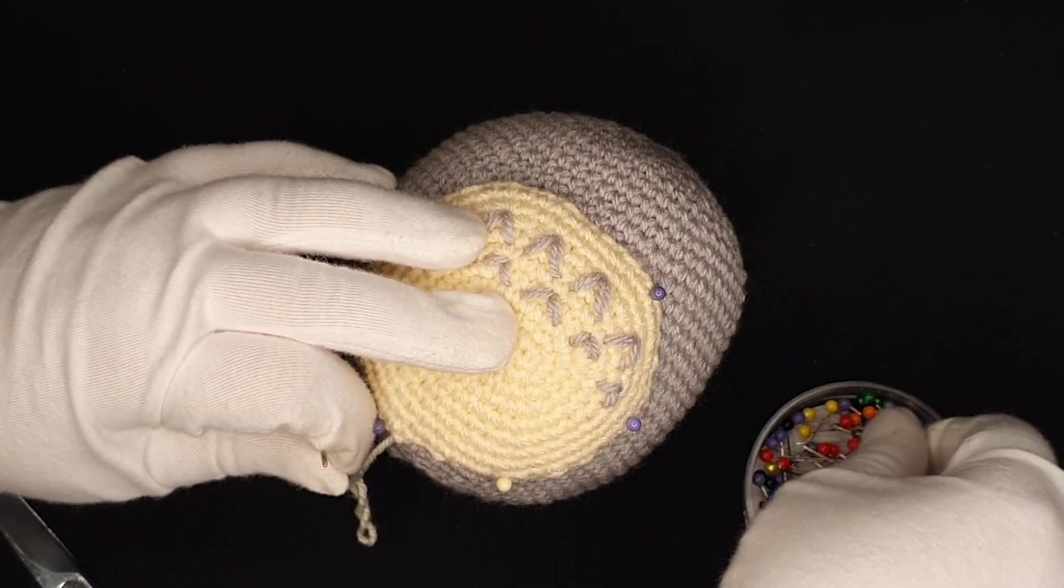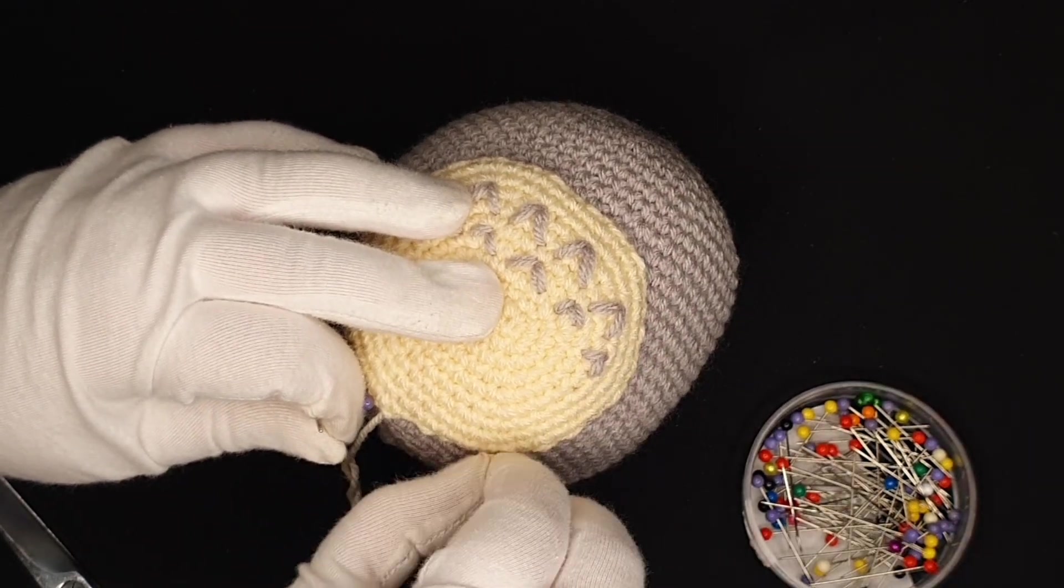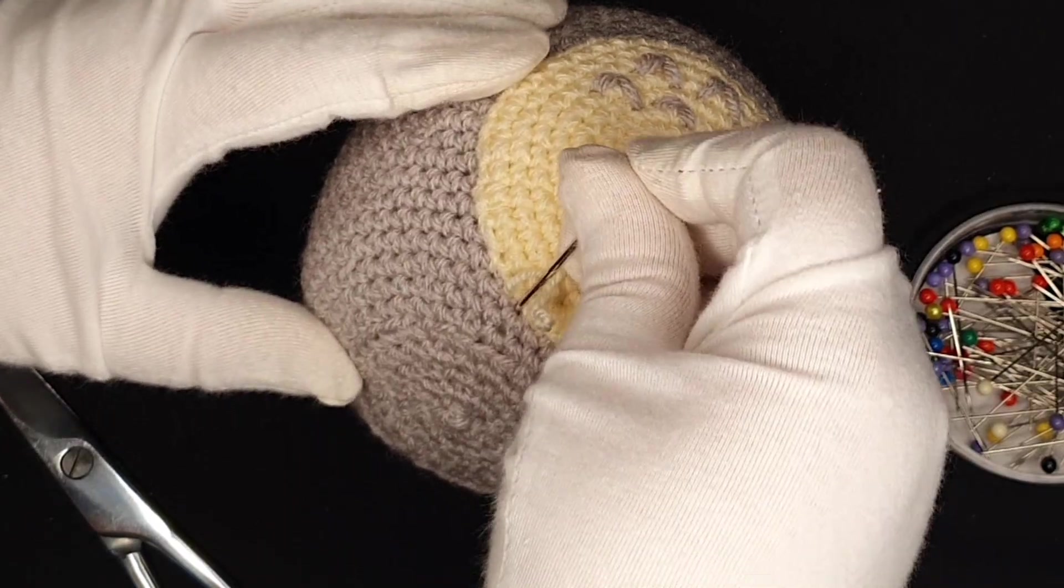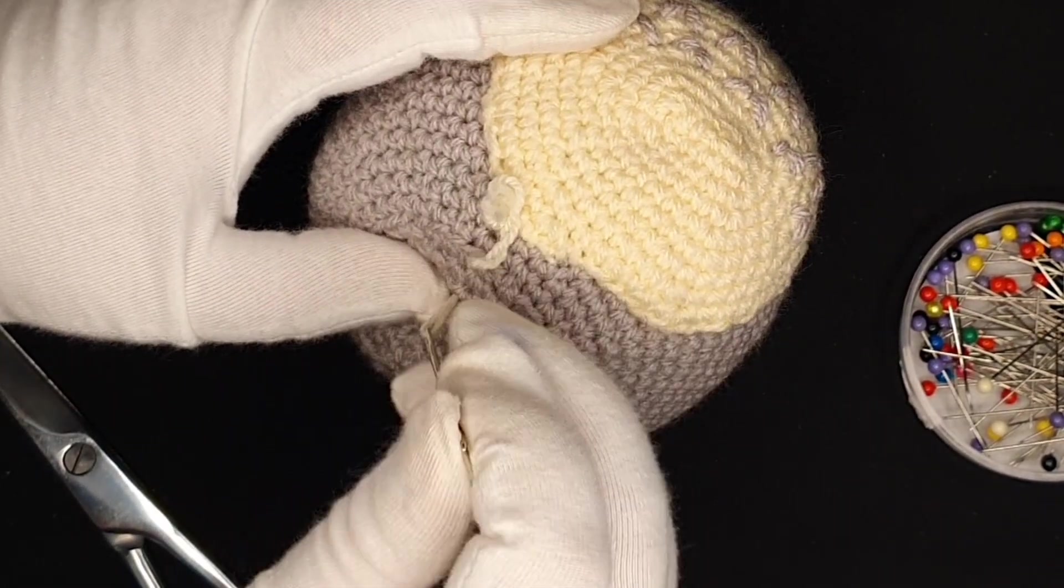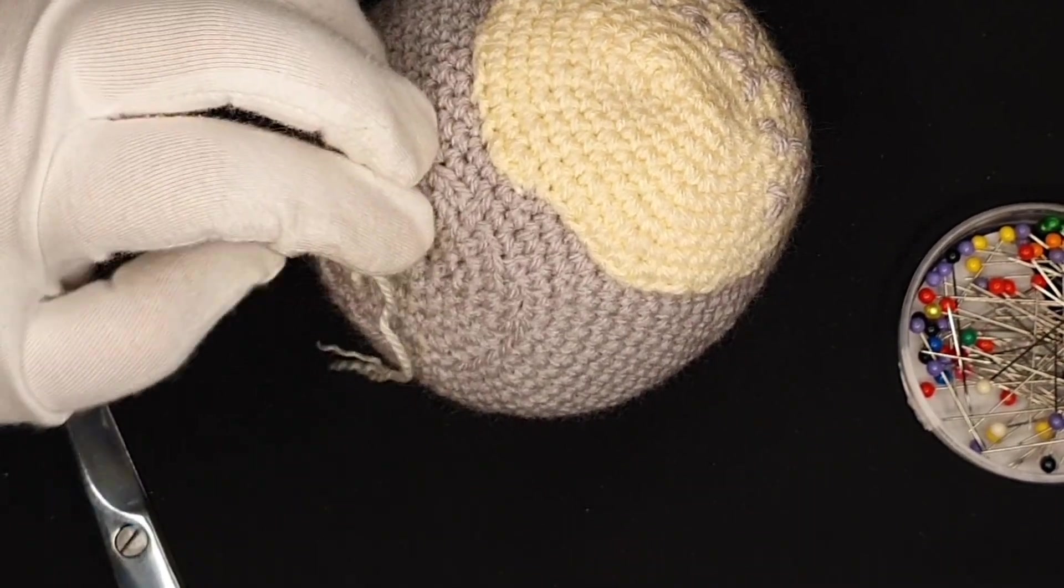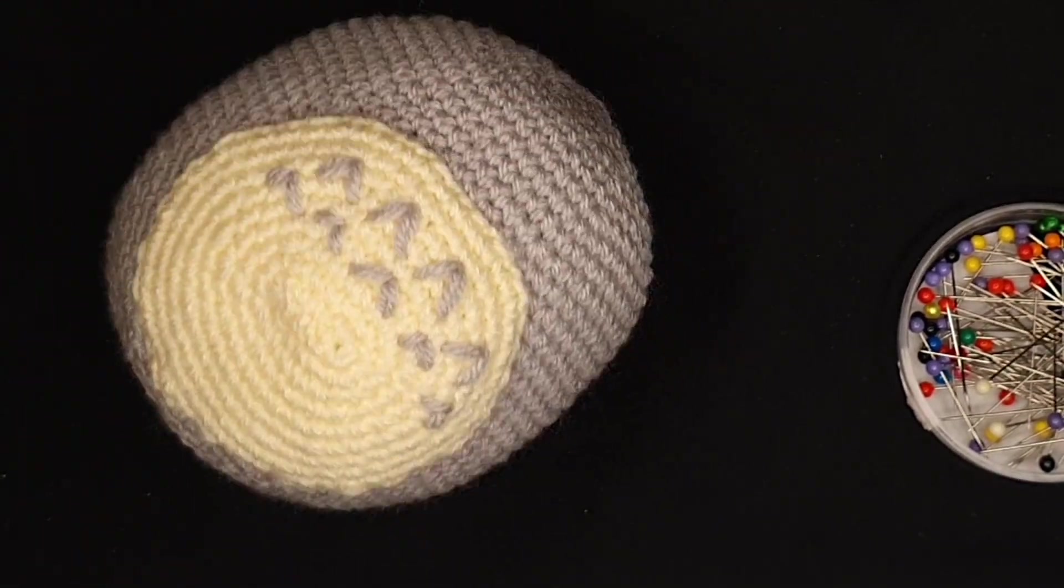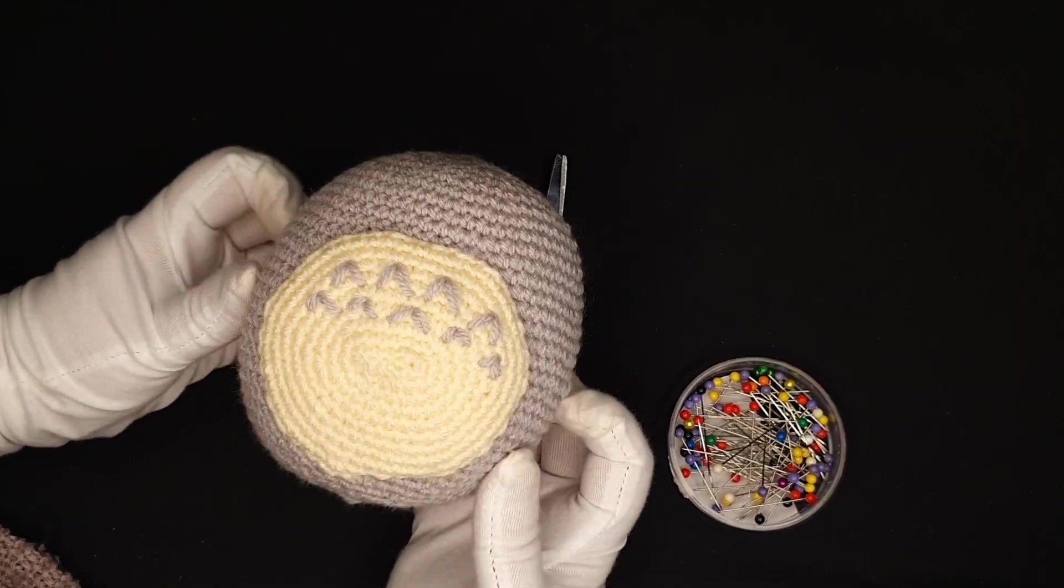Once we're done, we can then relieve Totoro of their pins and needles. Then I finish it off by poking the tail end into the body so that it is hidden but still has some extra length just in case it comes undone. That shouldn't happen, but wear and tear, so just in case. Well I'll be darned, it doesn't look half bad.